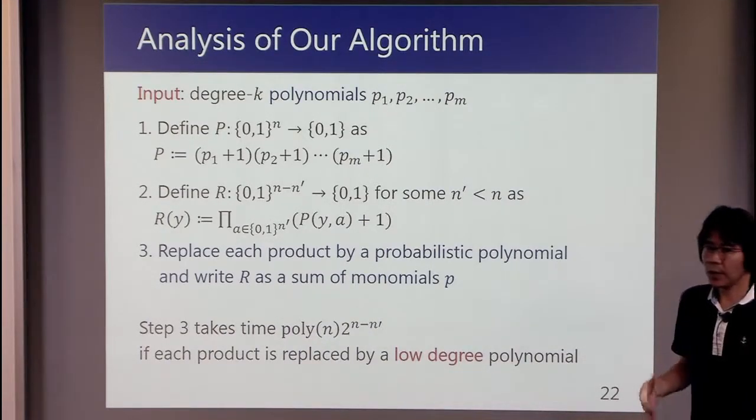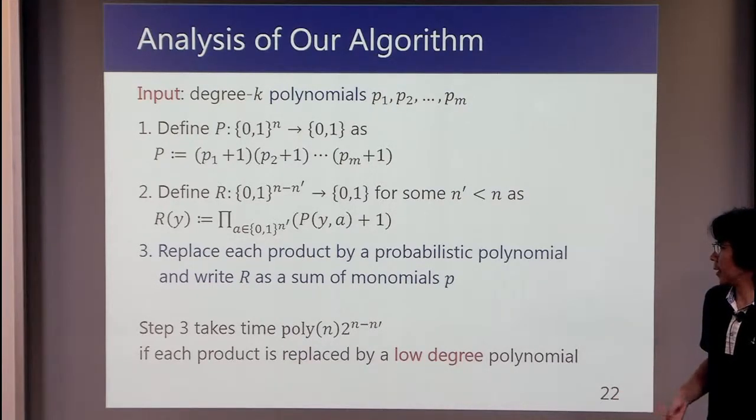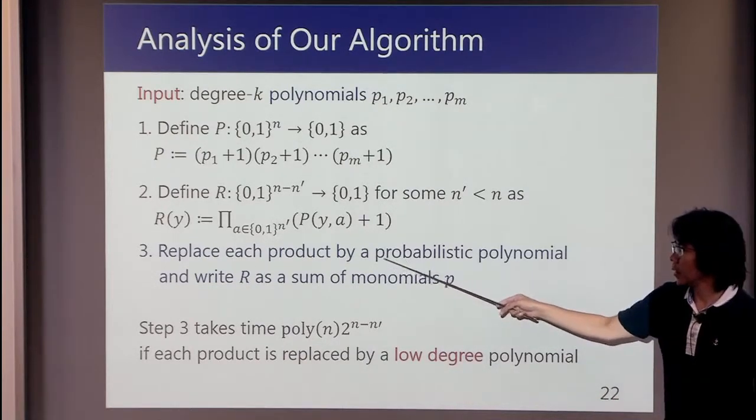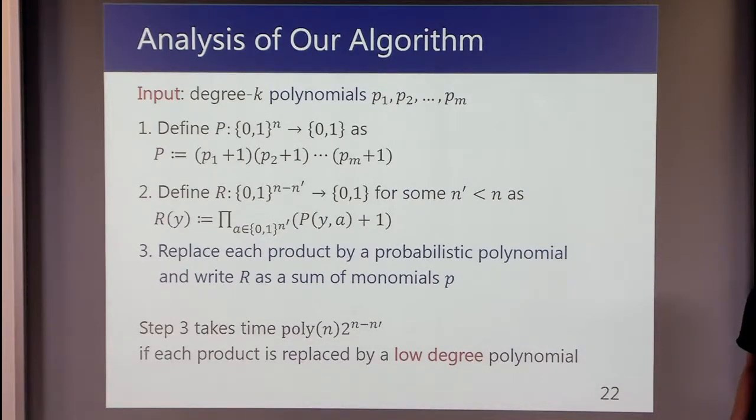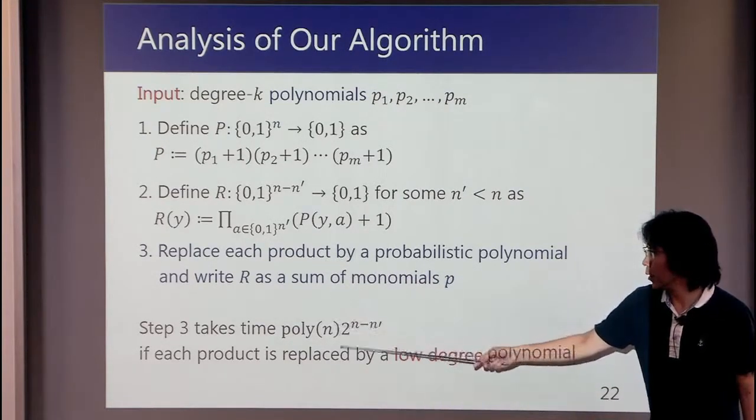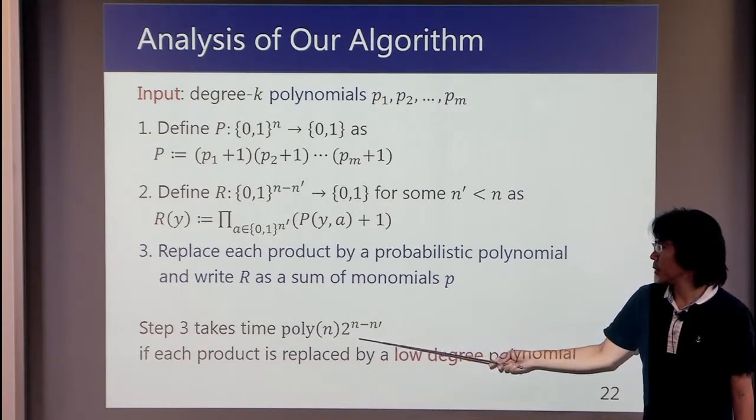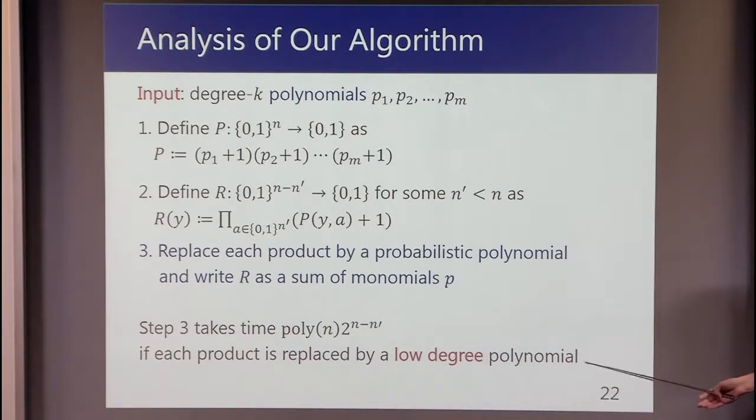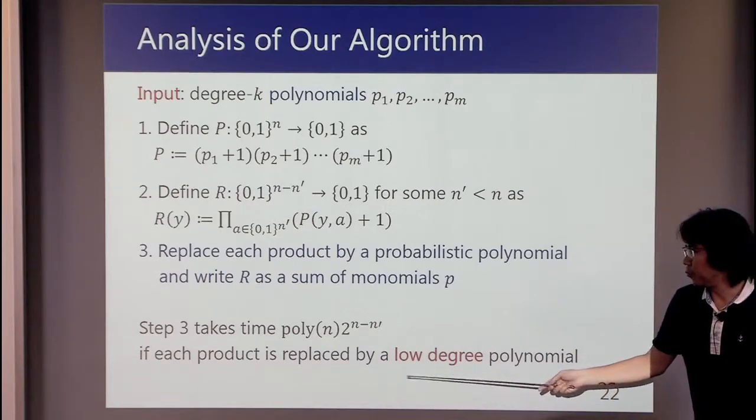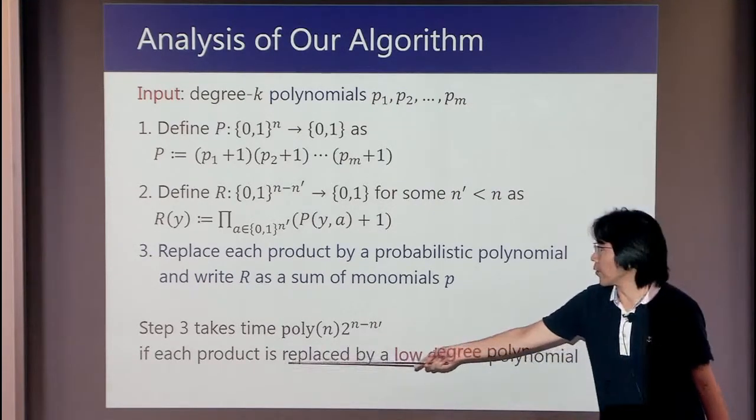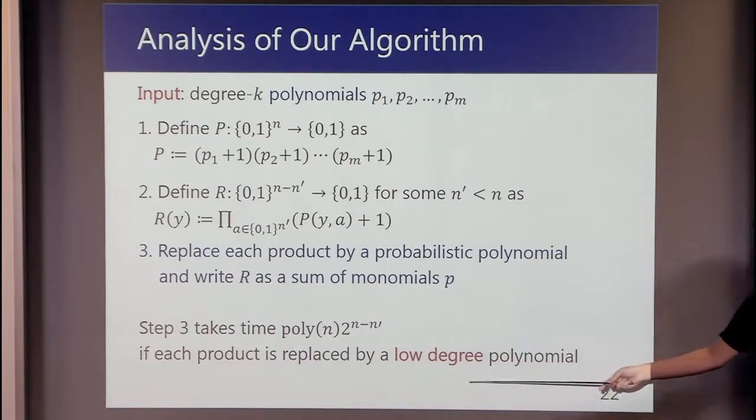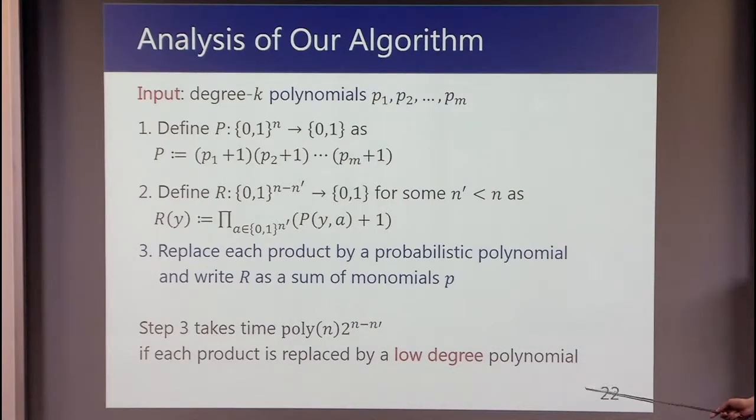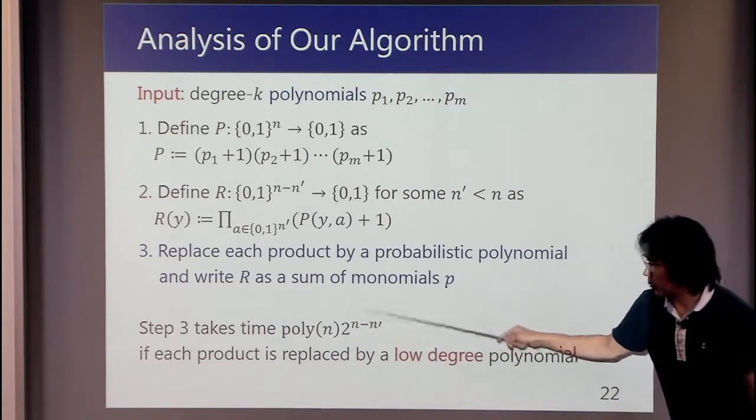To analyze the running time, the most important part is here. But this step takes only time poly(n)×2^(n-n') for appropriately chosen n', if we replace each product by a sufficiently low-degree polynomial. I don't show the calculation, but this is enough to get the bound here.